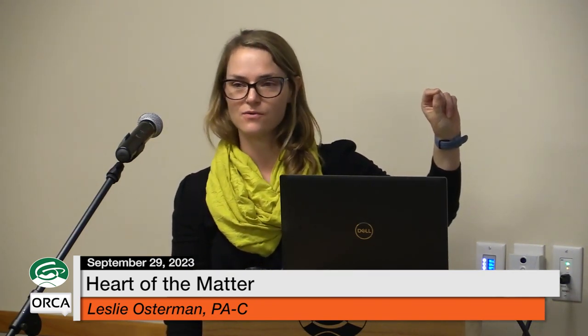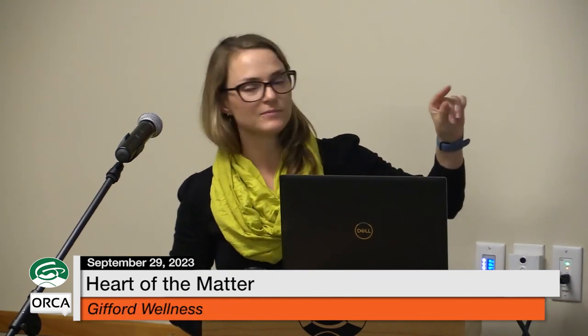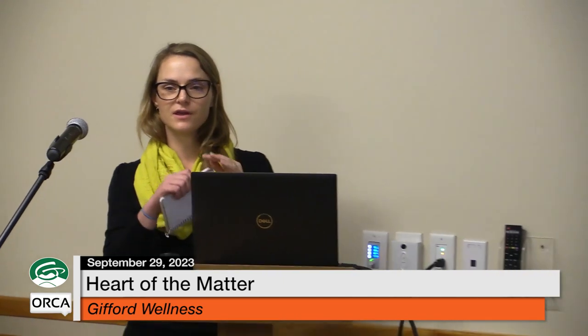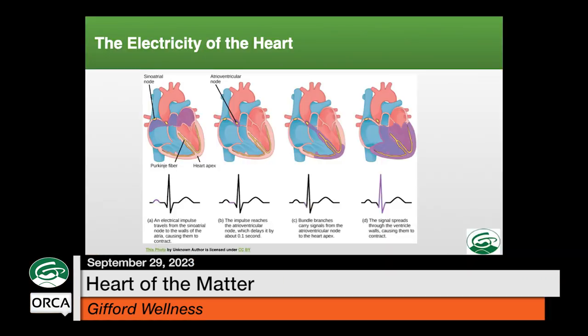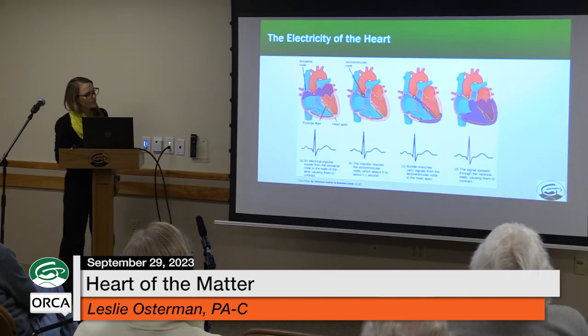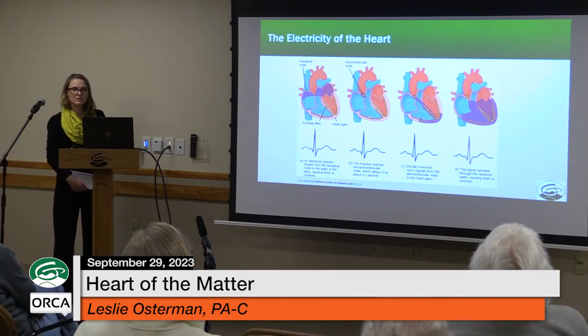The pumping function of the heart really relies on electricity moving through the heart to allow it to contract. The normal signal moves from the top of the heart — called the sinoatrial node, or SA node — and then it moves through both of those top chambers of the heart called the atria in a very quick and linear way to allow those top chambers to contract. Then it moves down to the center of the heart all the way to the bottom chambers called the ventricles, which we rely on for normal pumping function.